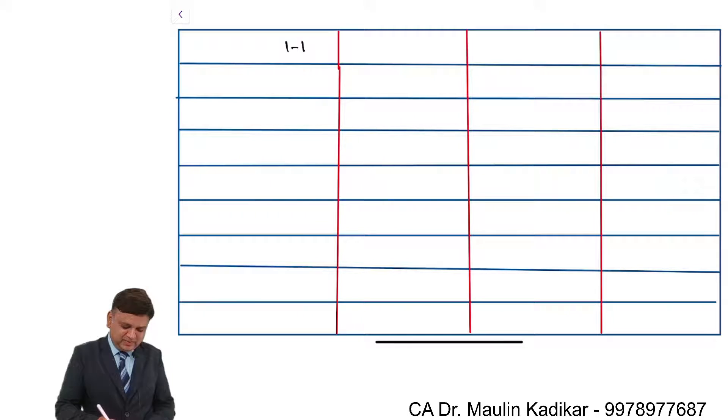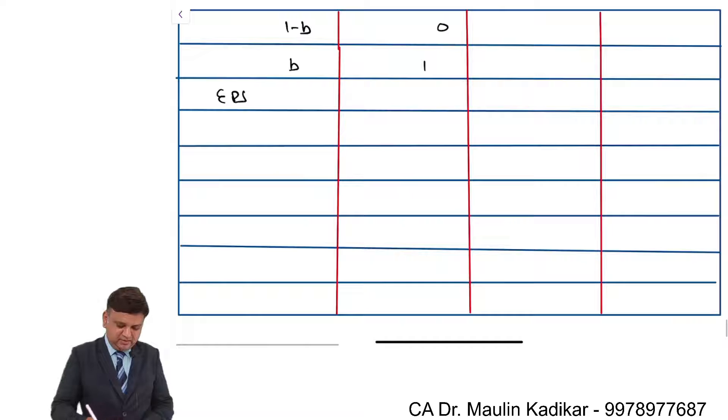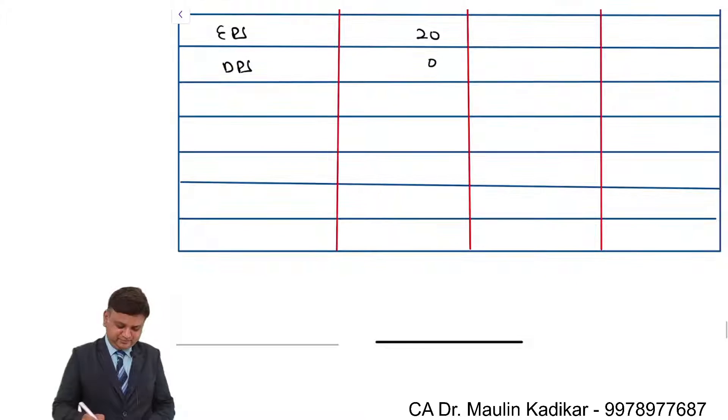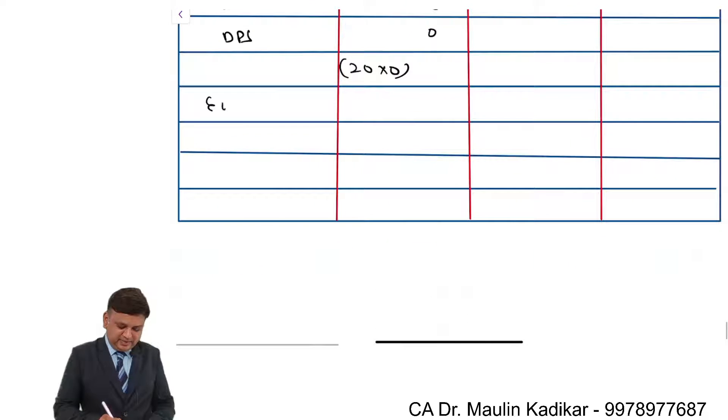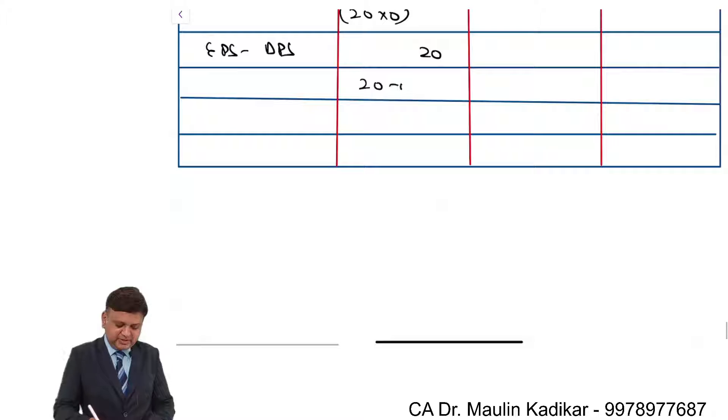1 minus b is the dividend payout ratio 0. Retention ratio is 1. Earning per share is 20. Dividend per share is 0. Why? Because the dividend payout ratio is 0. EPS minus DPS is 20, that is 20 minus 0.